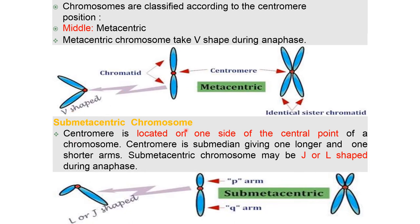Submetacentric chromosome: the centromere is located on one side of the central point of the chromosome. The centromere is submedian, giving one longer and one shorter arm. Submetacentric chromosomes may be J- or L-shaped during anaphase.